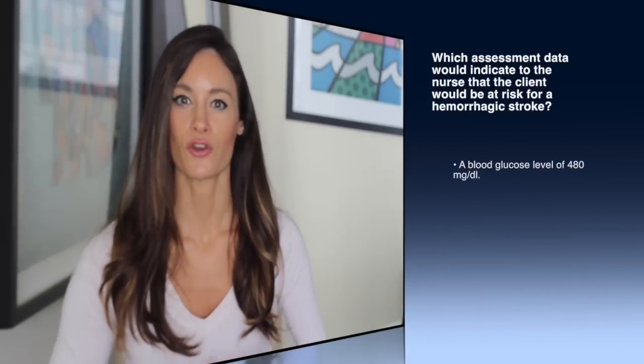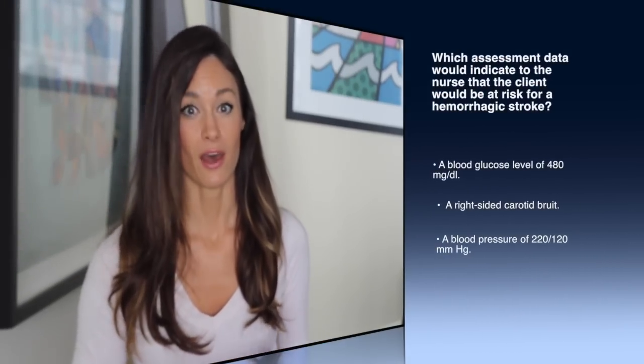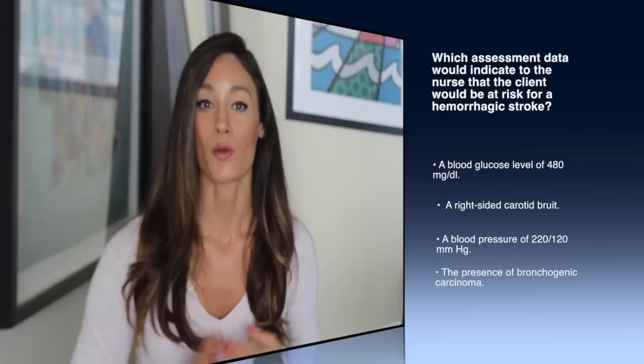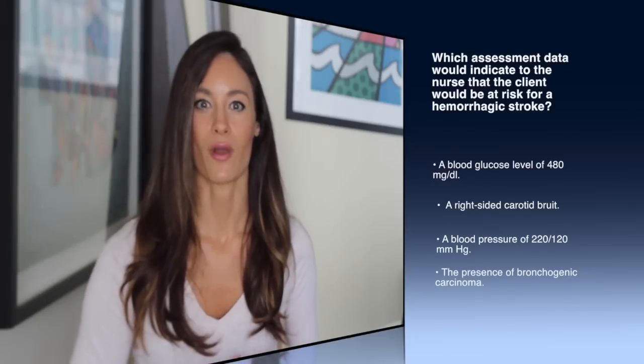Let's look at some NCLEX-type questions. Which assessment data would indicate to the nurse that a client is at risk for a hemorrhagic stroke? A) a blood glucose level of 480, B) a right-sided carotid bruit, C) a pressure of 220 over 120, or D) the presence of bronchogenic carcinoma. A blood glucose level can worsen stroke damage but is not the cause of hemorrhagic stroke. A carotid bruit may indicate stenosis but is associated with ischemic stroke. Bronchogenic carcinoma is a lung cancer not directly related to stroke. However, a severe elevation of blood pressure — a hypertensive crisis — is a major cause of hemorrhagic stroke and needs to be treated immediately. That is the correct answer.